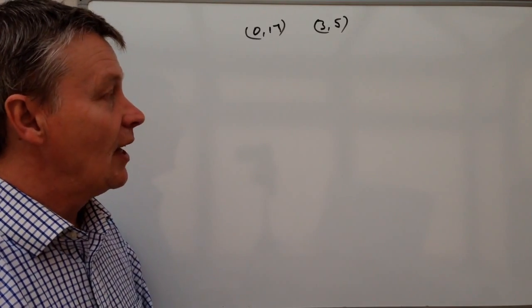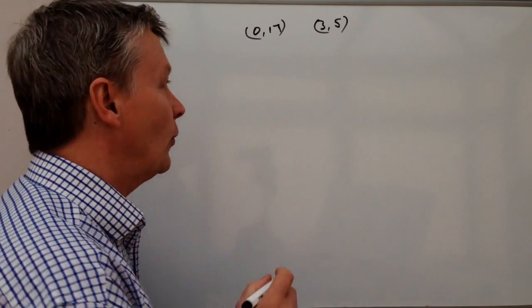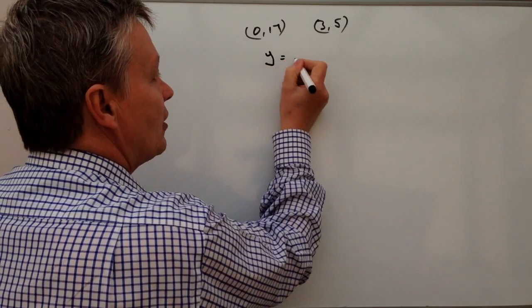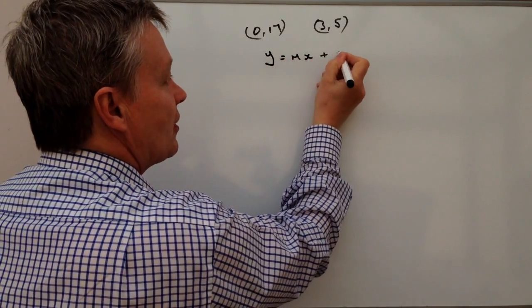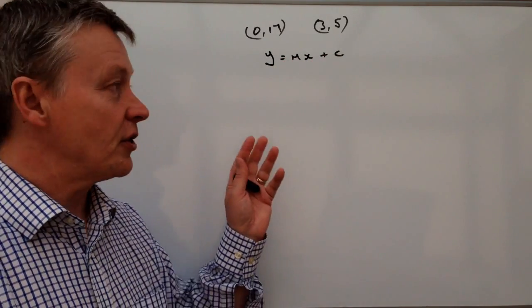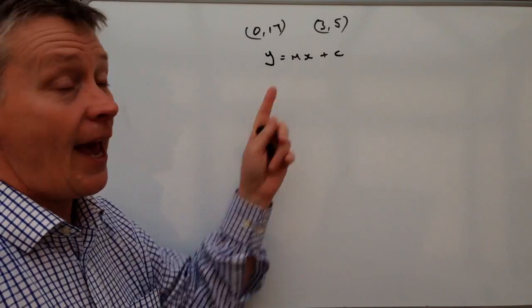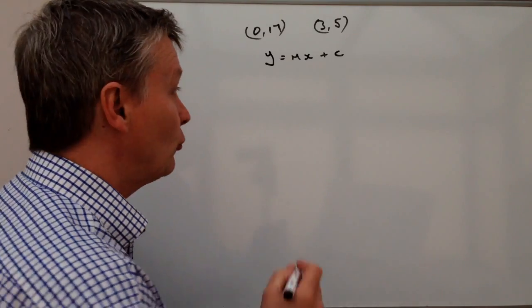So straight line graph. The equation generally that we use is y equals mx plus c. So the two things that we need to find out is m, which is the value of the gradient.